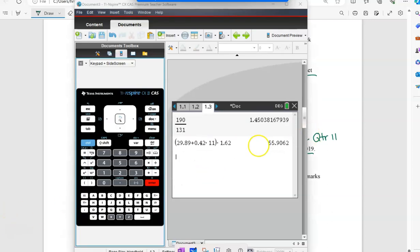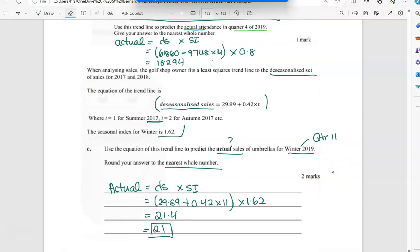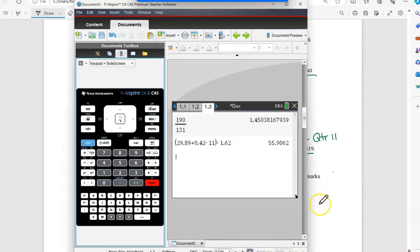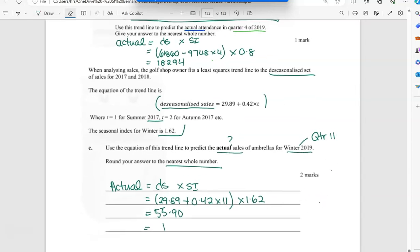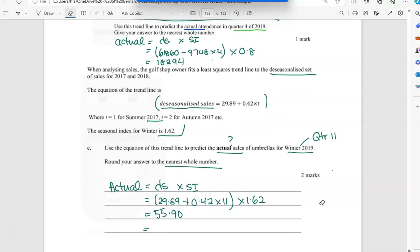Sorry, we did that on the calculator and that actually was wrong. We got 55.8, so 55.90. So we're going to go to the nearest whole number, so we will make that 56.